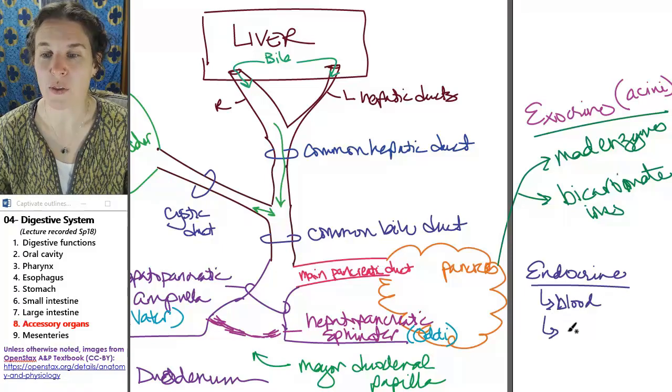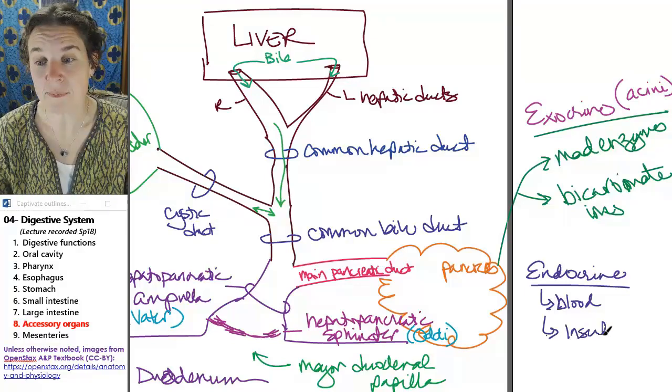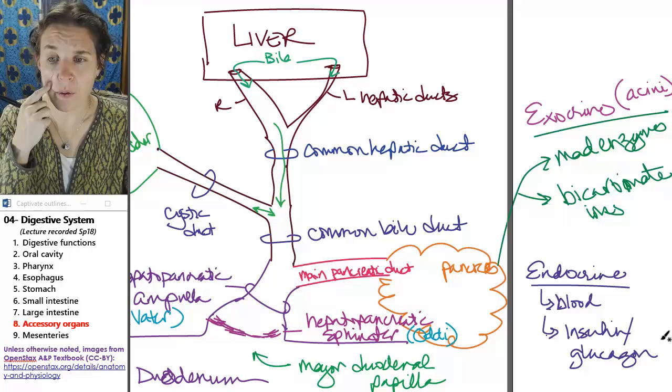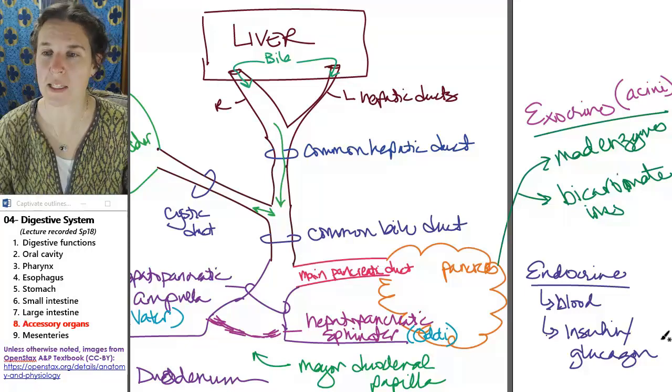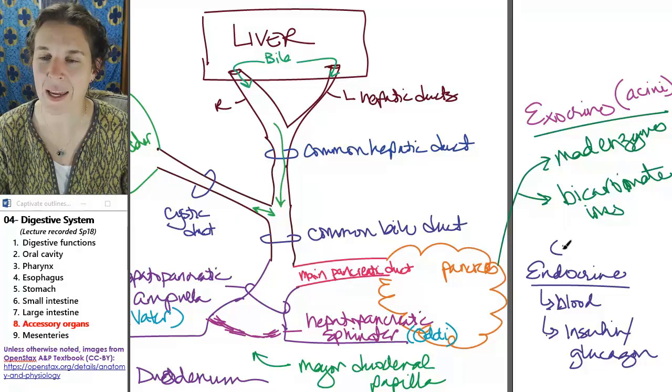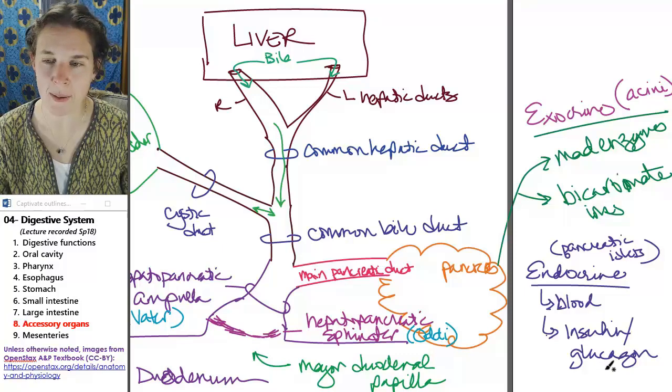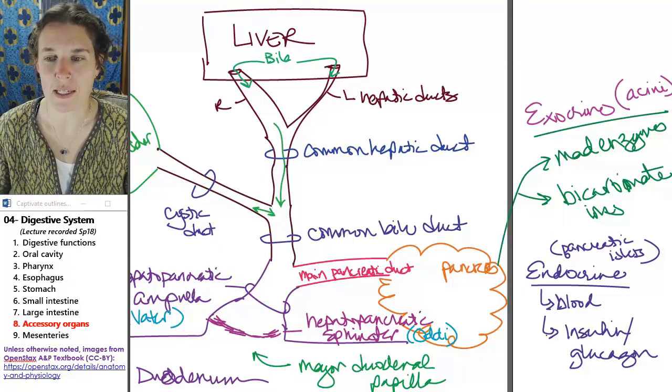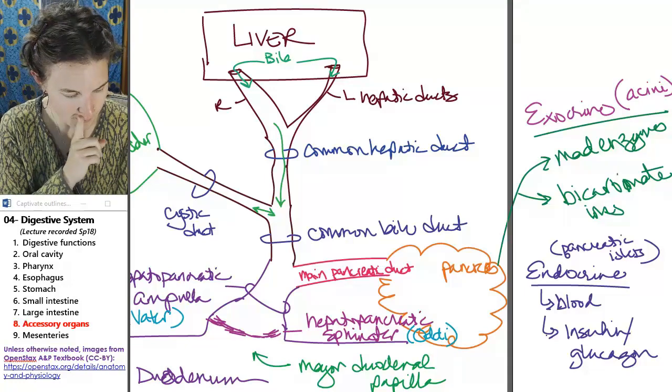The other 2% is endocrine. So the pancreas has endocrine function. And where do you think the endocrine substances are being secreted? They must be secreted into the blood, right? And so there are 2 main hormones that are secreted - insulin and glucagon. And I was going to say something about that - it's produced in these structures called pancreatic islets or another cool person's name, the islets of Langerhans. Why would we get rid of those things?